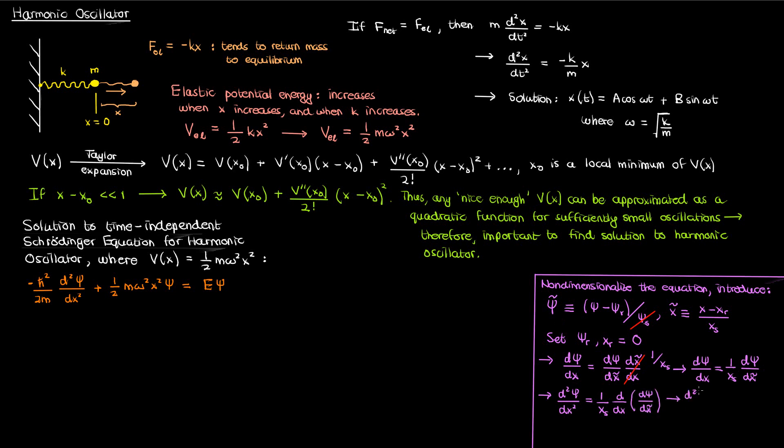What I'll do now is write the dx on the right as the differential of x tilde times x sub s which if you go back to the definition of x tilde is what x is in terms of x tilde. I can take the x sub s out of the differential on the right since x sub s is just a constant and when I do that I end up with x sub s squared in the denominator multiplying the second derivative of psi with respect to x tilde on the right.